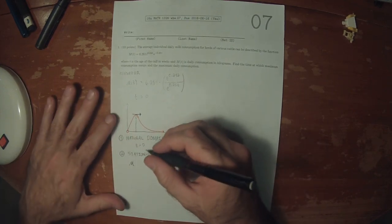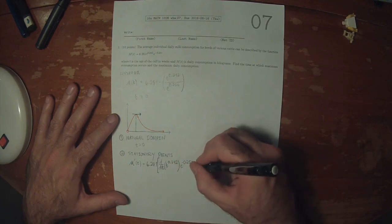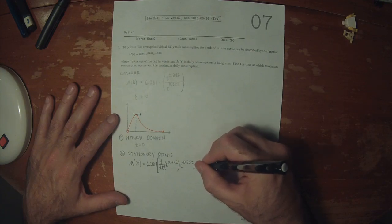So I'll compute the derivative of this expression. The derivative of t, well this 6 just hangs out, so that's 6.281. And then we'll need to do the product rule, so it will be the derivative of t to 0.242 multiplied by exponential negative 0.25 t, and then plus t to 0.242 times the derivative of exponential negative 0.25 t.